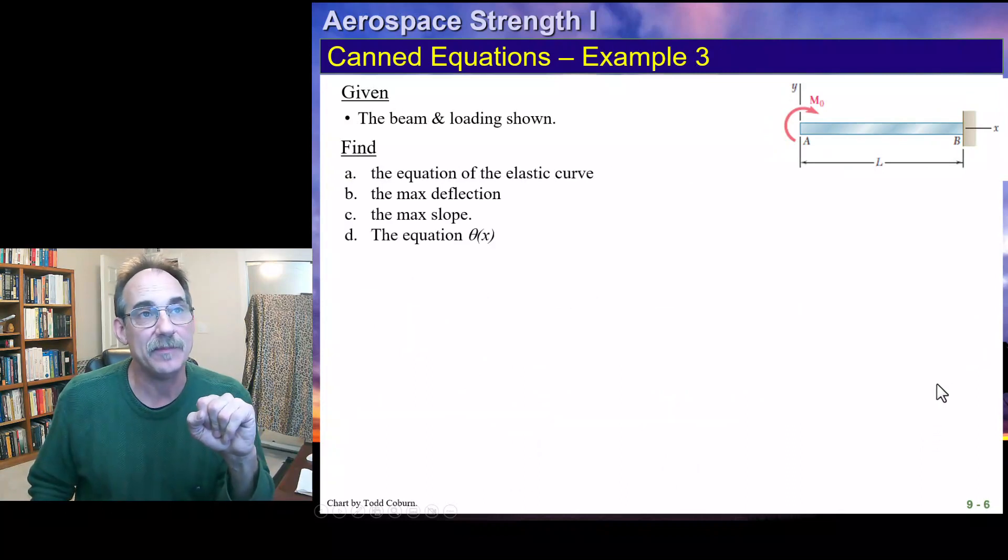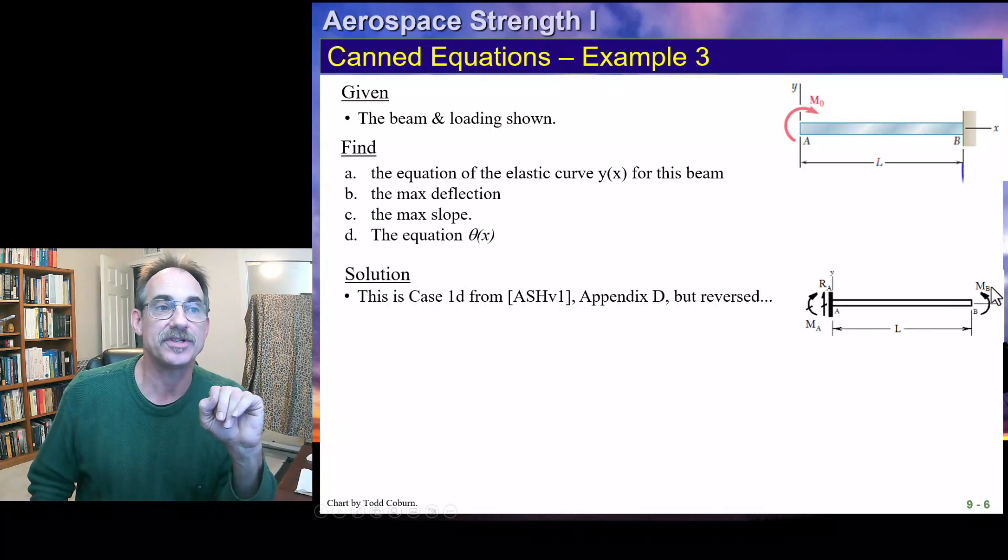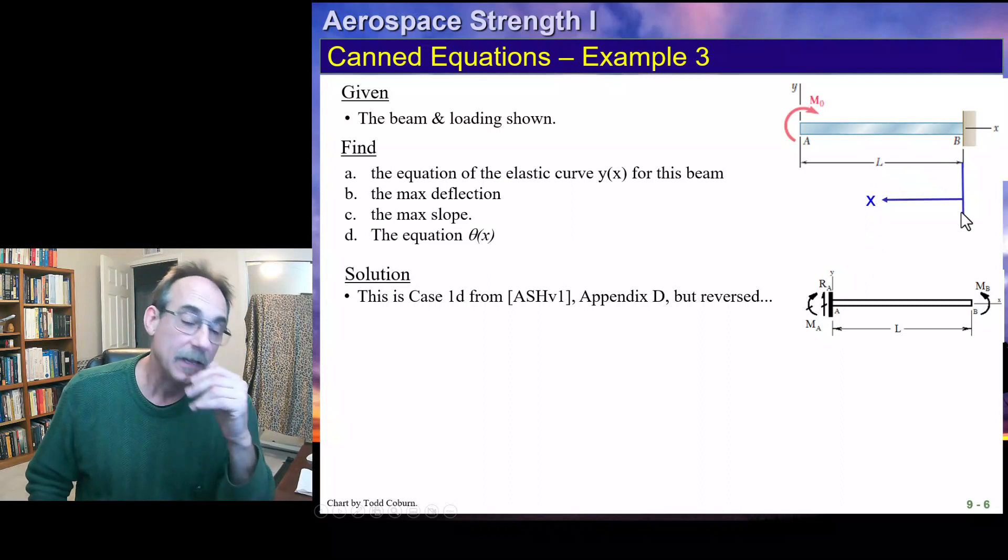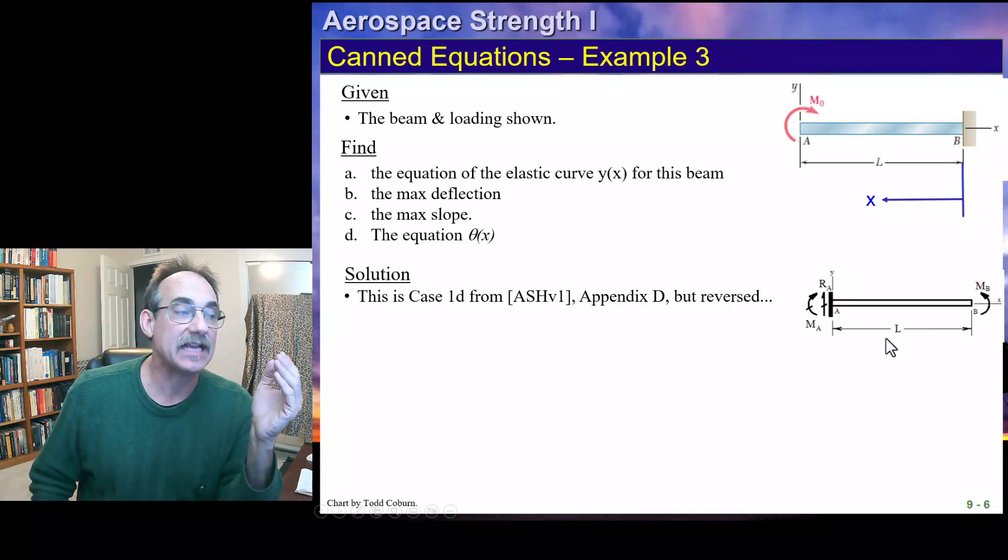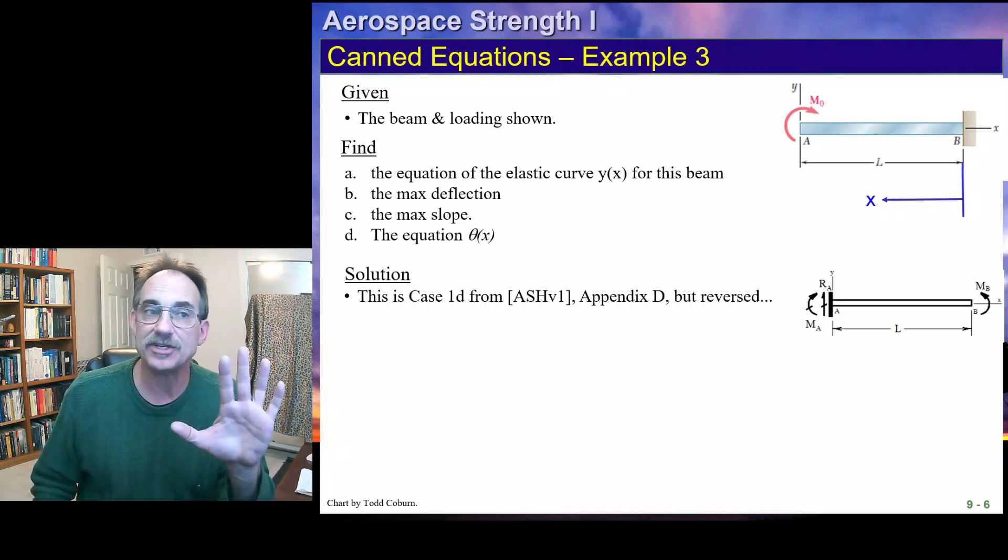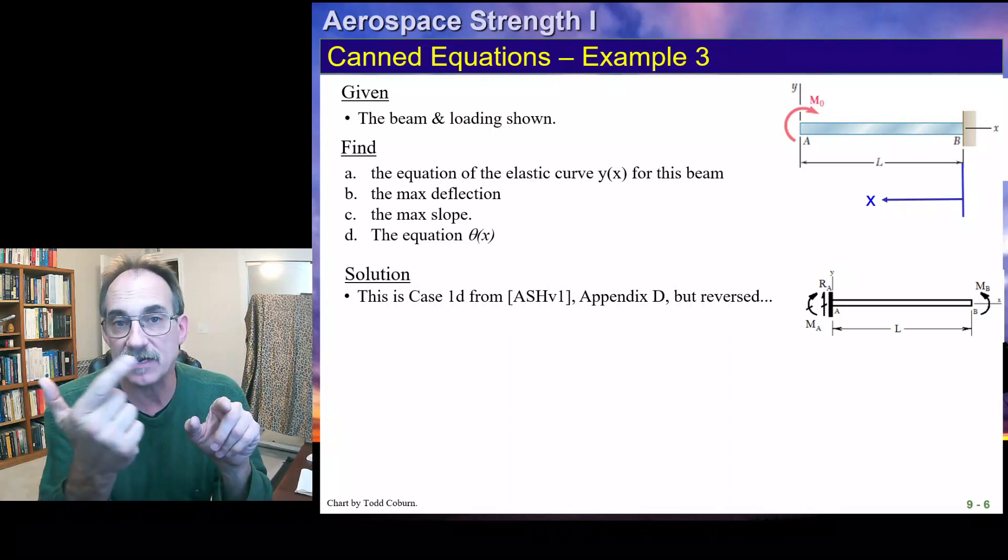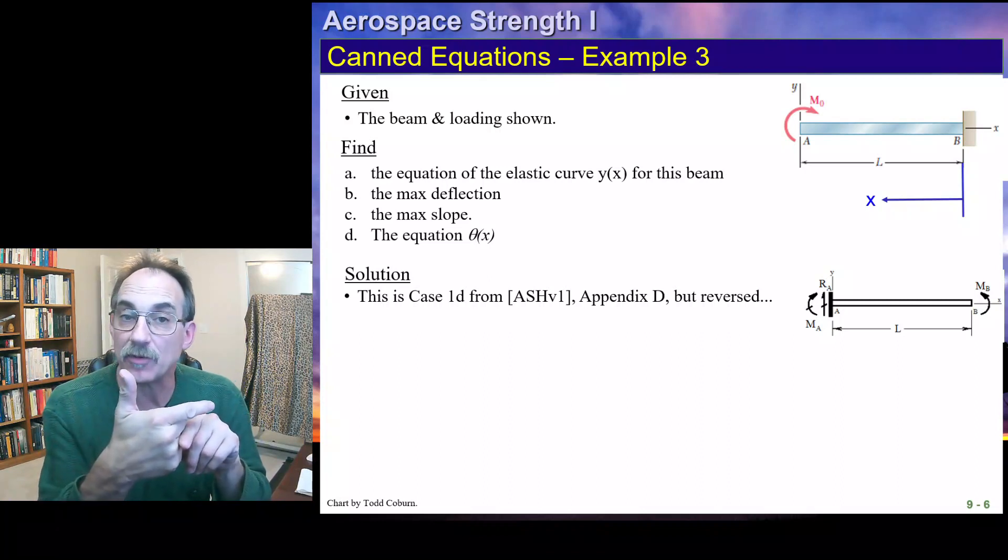If we have this beam here, you'll notice this also is covered, but it's not directly covered in the handbook. It's just this case reversed. It looks like this in the handbook, and it looks like the other in our actual problem. Now, you'll notice the case in our handbook is defining x. It's going to give us all the values, but it's defining x moving from left to right, from a to b. Our other beam actually is identical, but only if it's reversed.